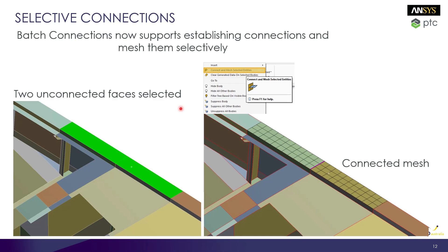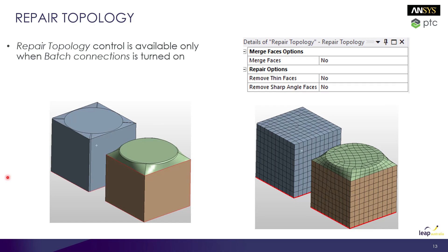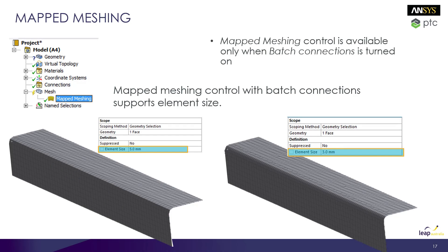At the R2 release, ANSYS introduced Batch Connections, which greatly improved the workflow for fabricated structures and mesh quality. This release brings further improvements, including selective connections, where users can select various surfaces and mesh them selectively — though this operation is not recorded and requires worksheet meshing to make it persistent. Another improvement is repair topology, which allows users to merge faces, remove thin faces, and remove sharp angle faces, with the merge face option supporting specific face scoping via geometry or name selections. Users can now also generate mapped meshes in conjunction with Batch Connections, further improving grid quality.